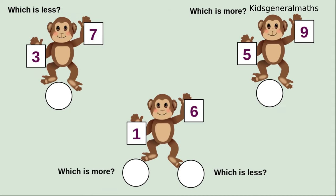The monkey has two numbers: 3 and 7. In these two numbers, we are going to find which is less. While comparing these two numbers, 3 and 7, which number is less? Yes, 3 is less. The next monkey has two numbers — 5 and 9. Here we are going to find which is more. While comparing these two numbers, which number is more? Any guess? Yes, you are right, 9 is more.